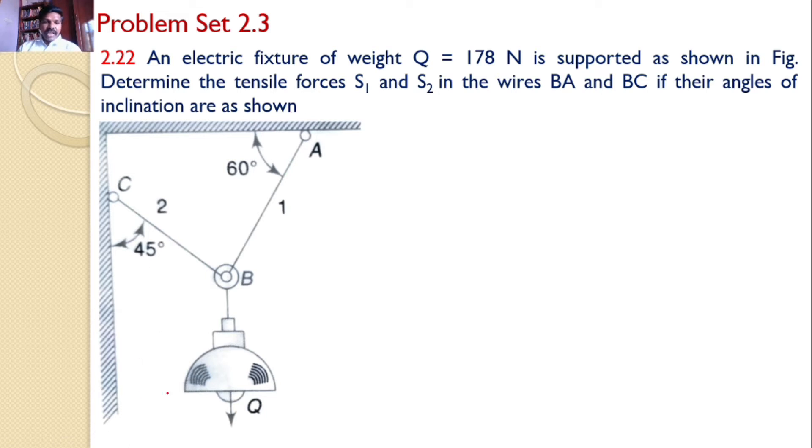That means an electrical fixture of weight 178 Newtons is supported by two strings AB and BC. Our interest is to find the tensile forces in the strings S1 and S2.